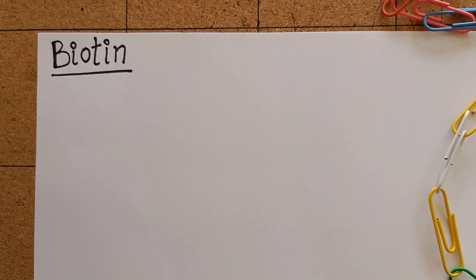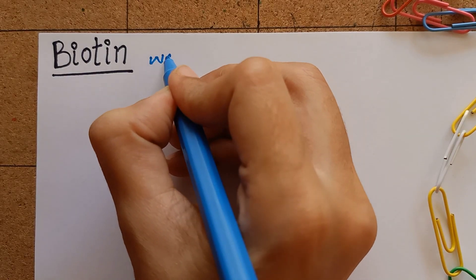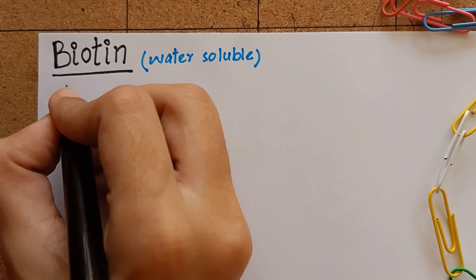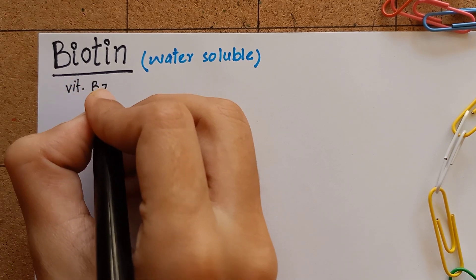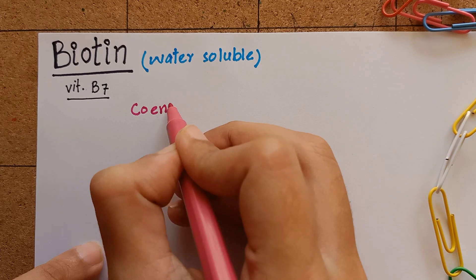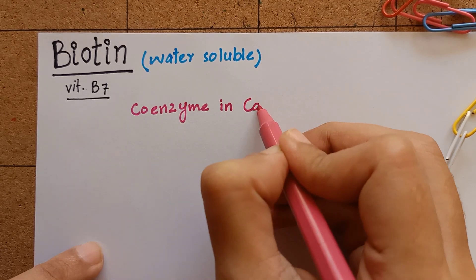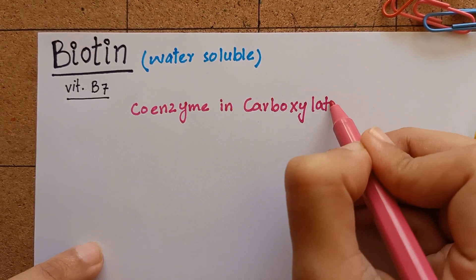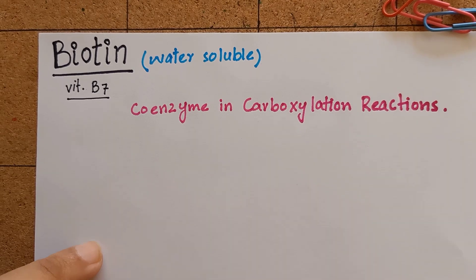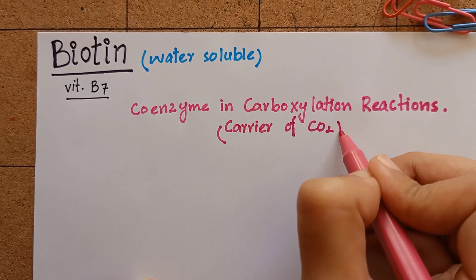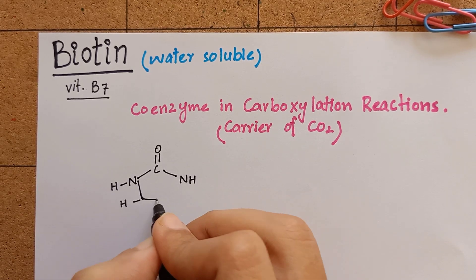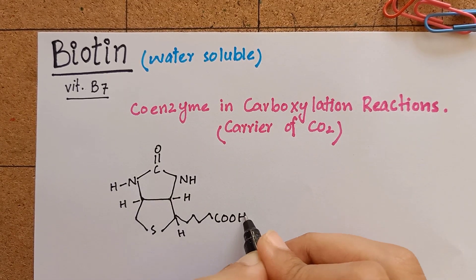We are going to learn about biotin, which is a water-soluble vitamin. It is also known as vitamin B7. Biotin directly participates as a coenzyme in carboxylation reactions, in which it serves as a carrier of activated carbon dioxide. Structurally, biotin is a sulfur-containing monocarboxylic acid.